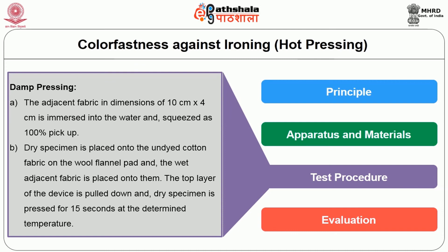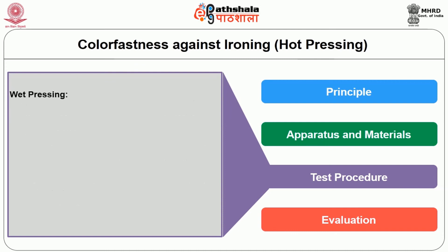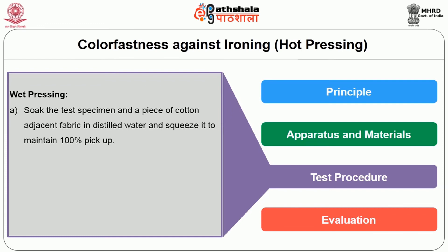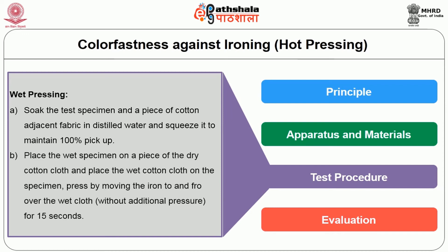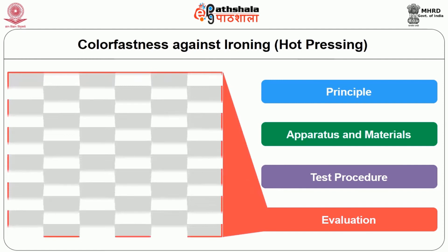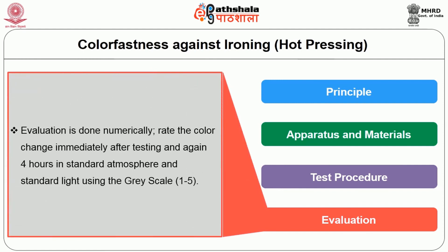The colour change of the specimen is noted down. The last pressing type is wet pressing: the test specimen and a piece of adjacent cotton fabric are soaked in distilled water and squeezed to make 100% pickup. The wet specimen is placed on a piece of dry cotton fabric and the wet cotton fabric is placed on the specimen. Press by moving the iron to and fro over the wet cloth without any additional pressure for 15 seconds. Evaluation is done numerically: the colour change rate is assessed immediately after testing and again after 4 hours in a standard atmosphere, then graded by grayscale 1 to 5.